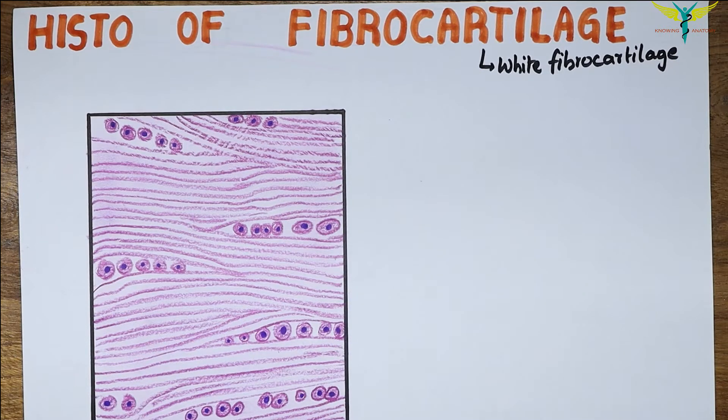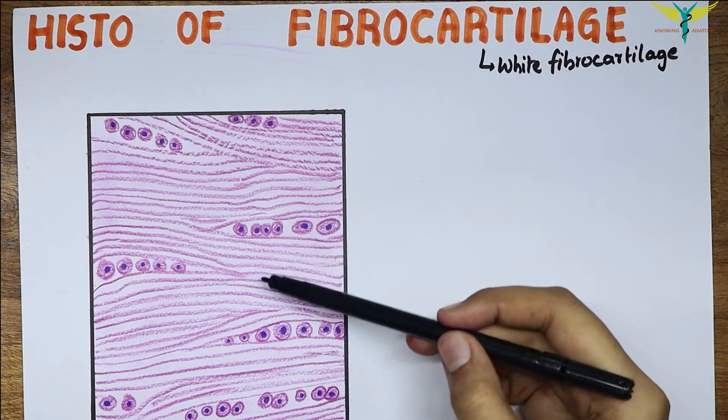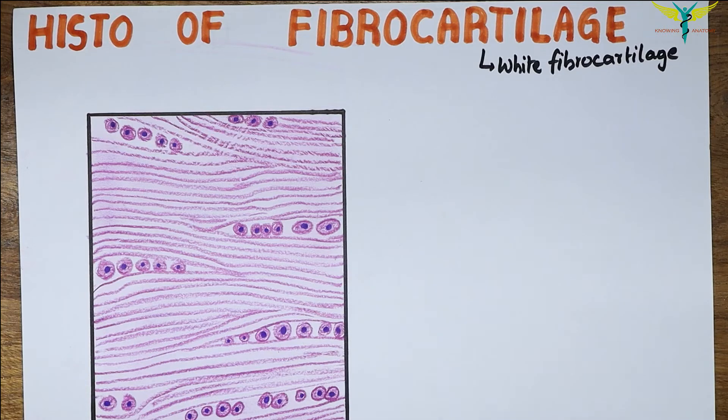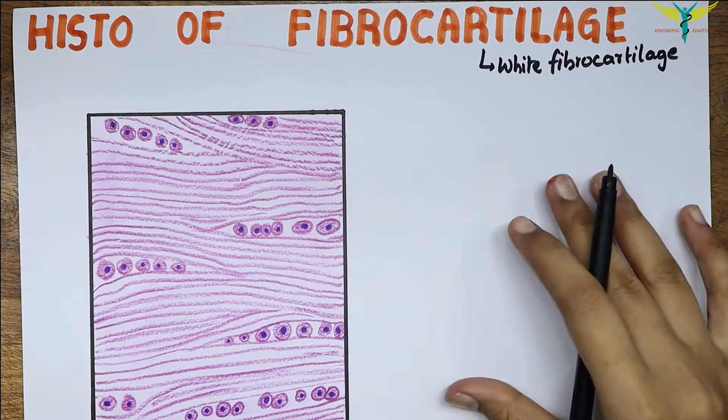In sections, this cartilage contains typical cartilaginous cells that are surrounded by capsules. The matrix contains numerous collagen bundles amongst which few chondrocytes are present. These fibers merge with surrounding connective tissue.